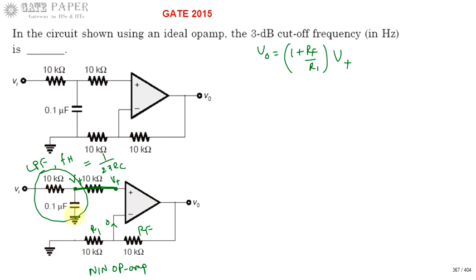If you substitute those values, 1 by 2 pi times R value, which is 10 kilo ohms, and C value is 0.1 microfarad.